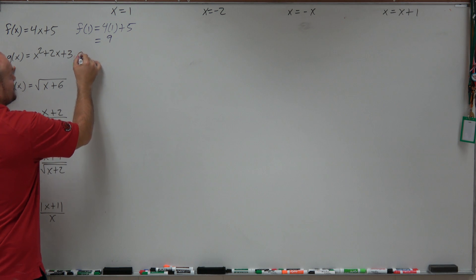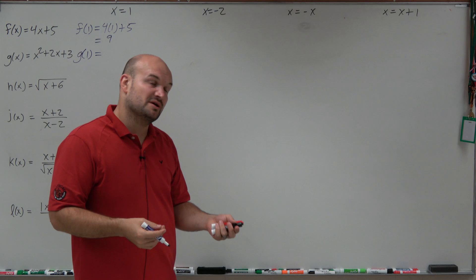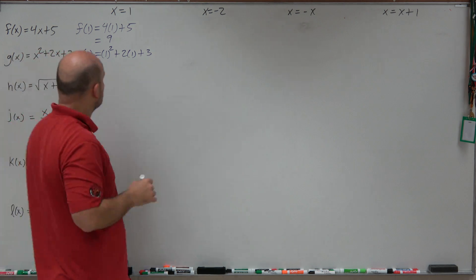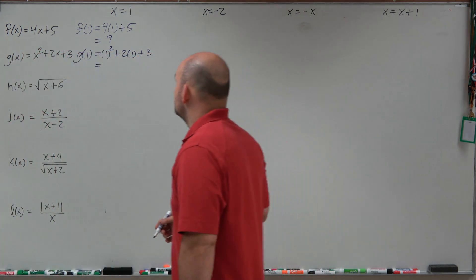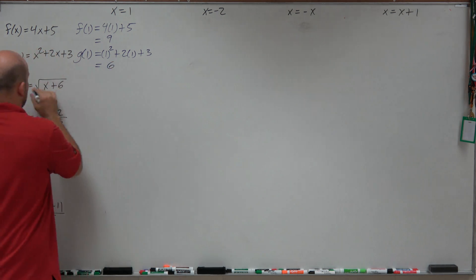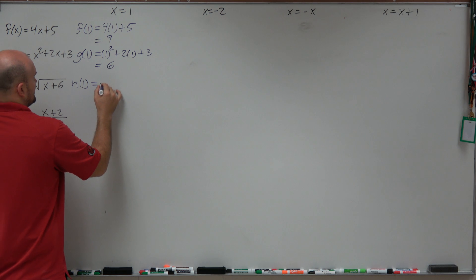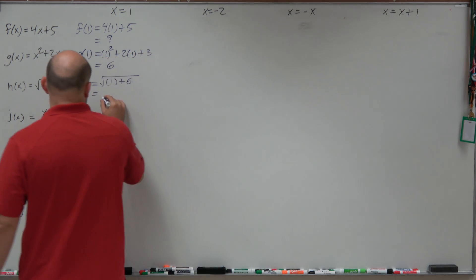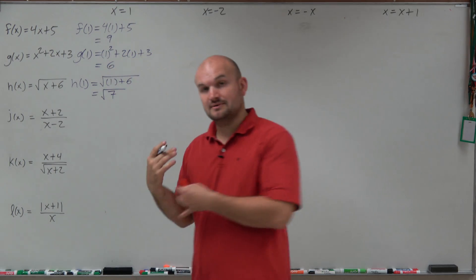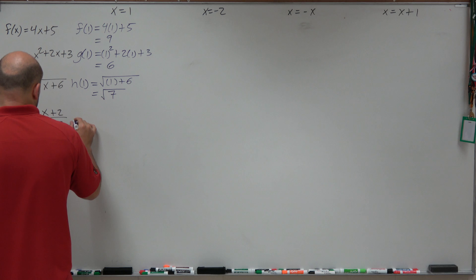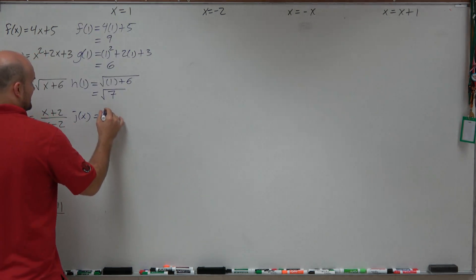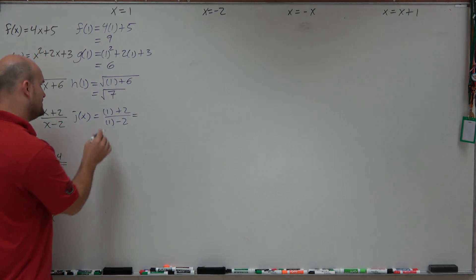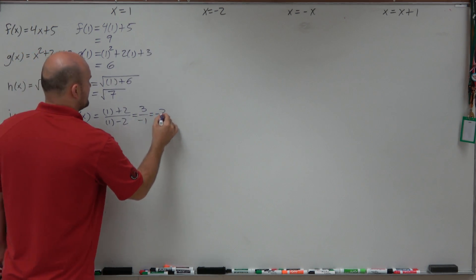Moving on to the next one, I have g of 1 — that's a different function with the same input. So g of 1 equals 1 squared plus 2 times 1 plus 3. That's 1 plus 2 plus 3, which equals 6. Here I have h of 1: 1 plus 6 equals 7, and the square root of 7 cannot be simplified, so we leave it as square root of 7. For j, 1 plus 2 over 1 minus 2 gives us 3 over negative 1, which equals negative 3.